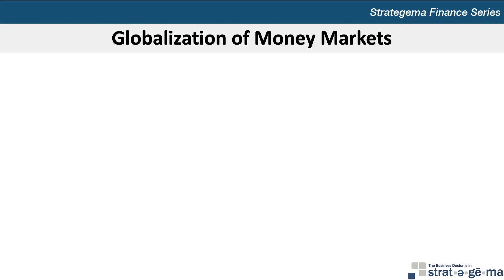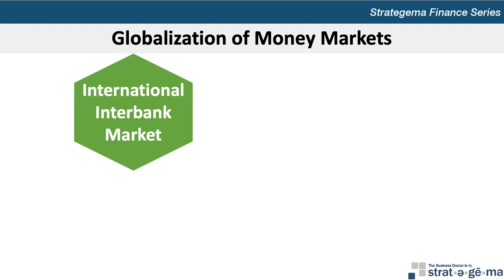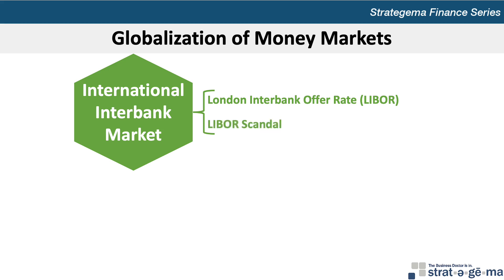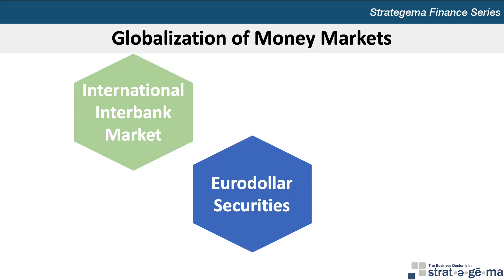The last key concept in the chapter is the globalization of money markets. As international trade and financing have grown, money markets have developed in Europe, Asia, and South America. International banks facilitate international money markets by accepting deposits and providing loans in a wide variety of currencies. The rate charged for a loan from one bank to another in the international interbank market is the London Interbank Offer Rate, or LIBOR, which is similar to the federal funds rate in the United States. In 2012, some banks were charged with colluding to manipulate LIBOR in an attempt to boost their trading profits by falsely reporting their interbank rates. As corporations outside the United States have increasingly engaged in international trade in U.S. dollars, U.S. dollar deposits in non-U.S. banks have grown, and these dollar deposits in Europe are referred to as eurodollars.